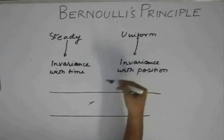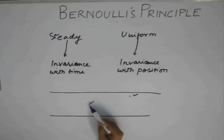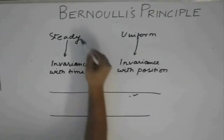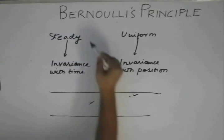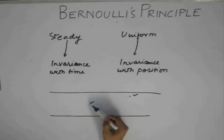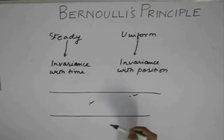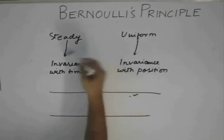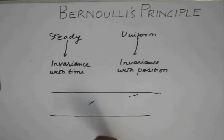If the flow is non-uniform, the property at one location and the property at another location might differ. If I say the flow is unsteady, the property at a point might change with time interval t.